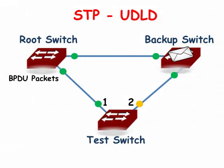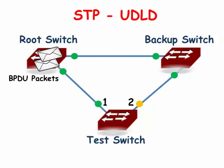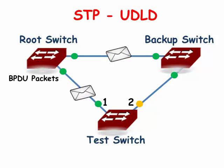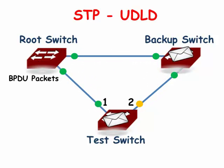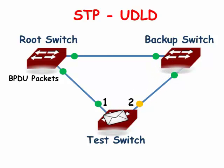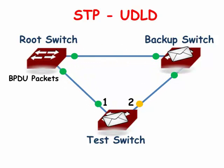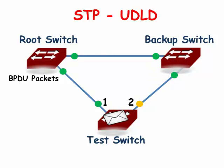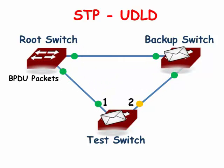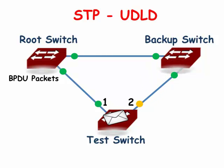In the previous video, we looked at problems that could be created by unidirectional links. In other words, a connection between two switches where some or all types of data packets can be sent and received in one direction but not the other.